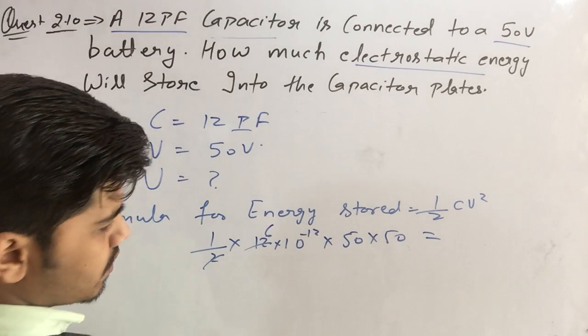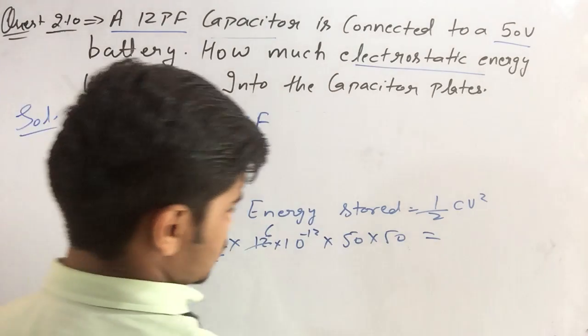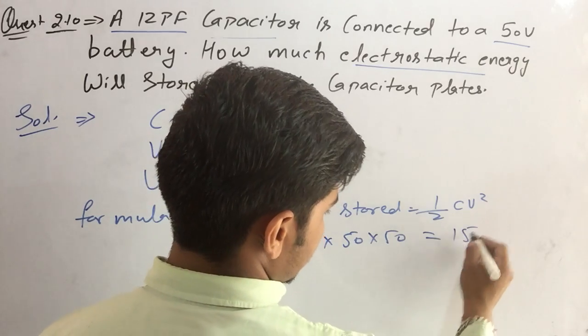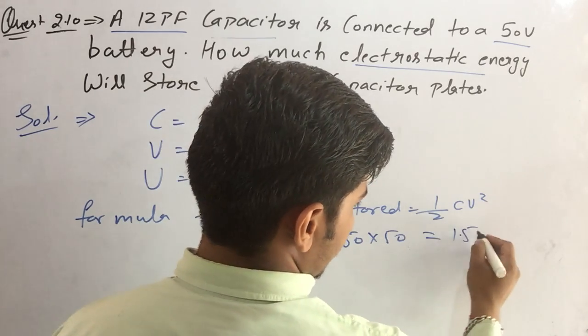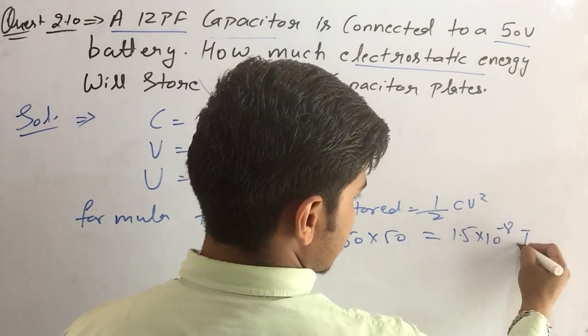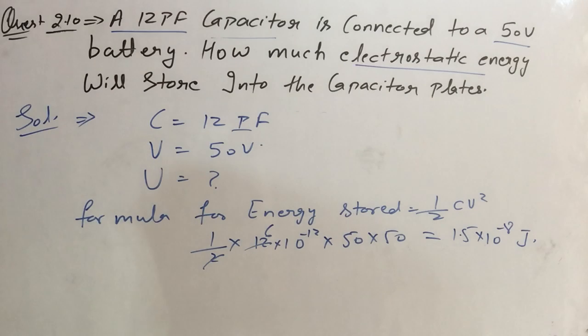After calculating: 5, 25, 6, 150... it is 1.5 into 10 to the power minus 8 joules. So students, this is the solution.